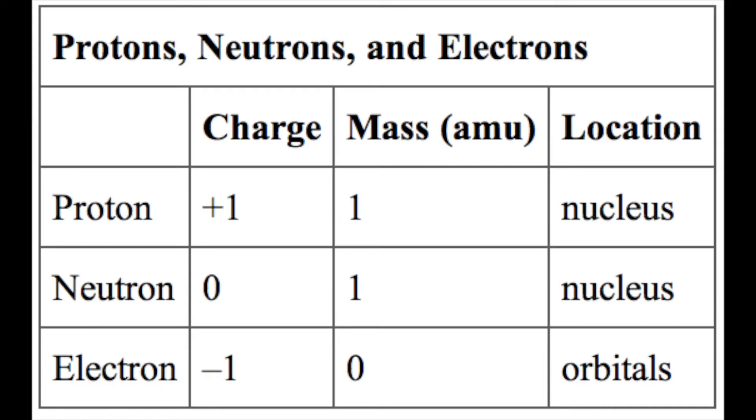Although similar in mass, protons are positively charged while neutrons have no charge. Therefore, the number of neutrons in an atom contributes significantly to its mass but not to its charge.